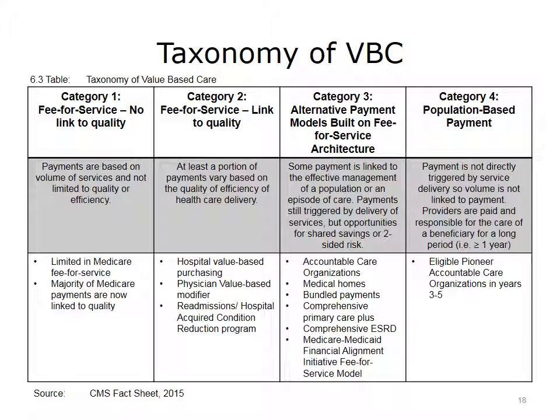CMS has developed a taxonomy to categorize different types of health care payment models, showing four categories that increase in both complexity and the amount of money at risk for the provider. In the more basic categories — one and two — payments are still made on a fee-for-service schedule, but payments or penalties increase depending on the quality of care. In the more complex categories — three and four — value-based payments are referred to as alternative payment models, where the concept of shared risk comes into play, meaning the provider agrees to keep a certain number of people well and is paid more or less accordingly.